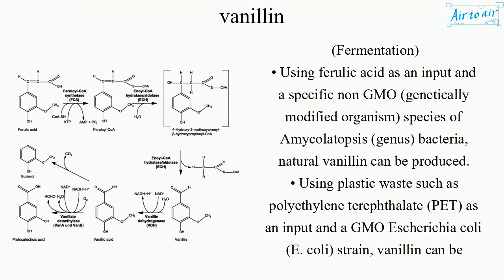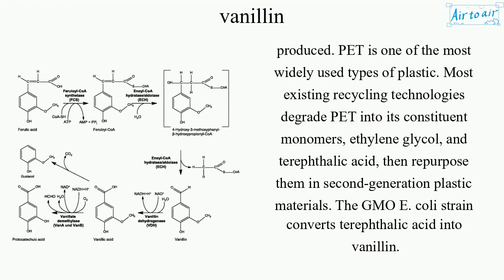Using plastic waste such as polyethylene terephthalate (PET) as an input and a GMO Escherichia coli (E. coli) strain, vanillin can also be produced. PET is one of the most widely used types of plastic. Most existing recycling technologies degrade PET into its constituent monomers — ethylene glycol and terephthalic acid — then repurpose them in second-generation plastic materials. The GMO E. coli strain converts terephthalic acid into vanillin.